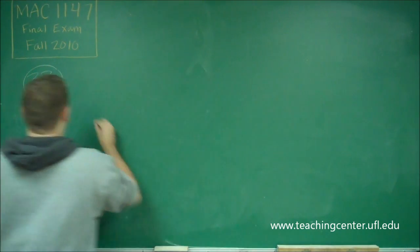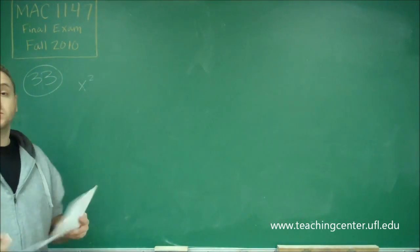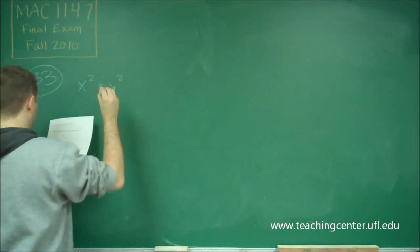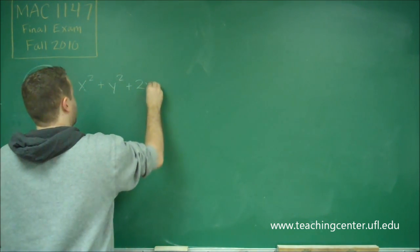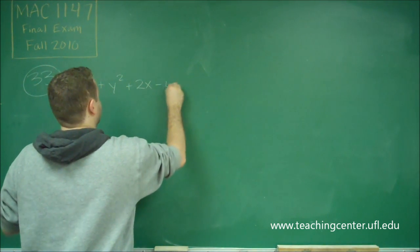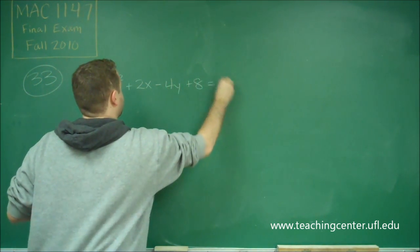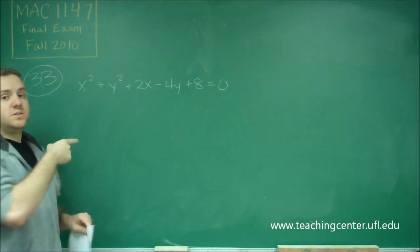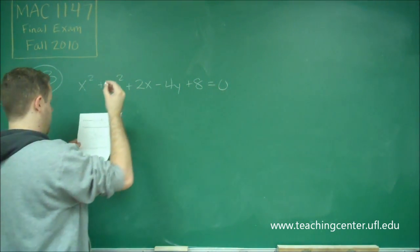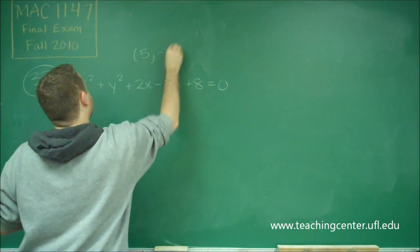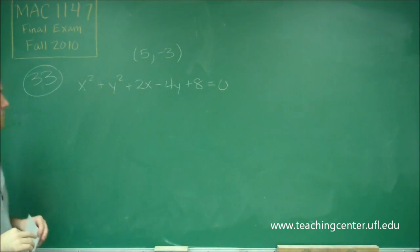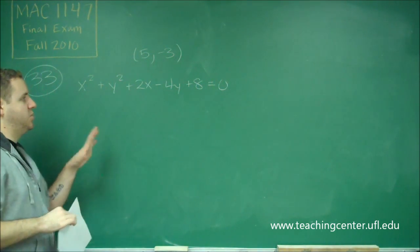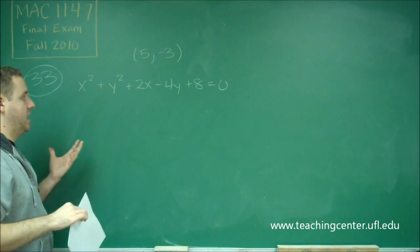So let me write these out here. Our circle equation is not given to you in standard form, so we're going to have to do some work with it. We have x squared plus y squared plus 2x minus 4y plus 8 equals 0. So we want the line that goes through the center of that circle and the point 5, negative 3. We need to find the center of this circle, which means we need to get it into our standard form that's factored out.